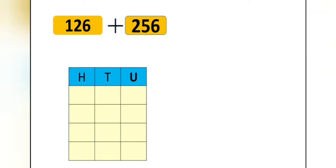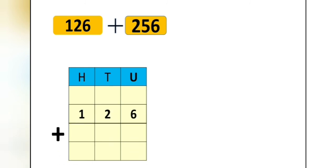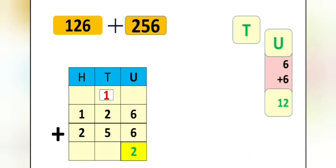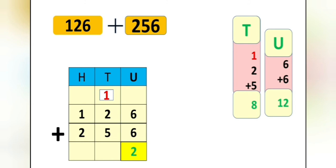One more example is here in front of you: 126 plus 256. This is the units place, tens place, and hundreds place. Now let us put these numbers in their proper places. Let us add the units place first. 6 plus 6 is equal to 12. In the number 12, we have 1 ten and 2 units. So we will write 2 in the units place and 1 will go as a carry over in the tens place. Now let us add the tens place: 1 plus 2 plus 5 is equal to 8. So we will write 8 in the tens place.